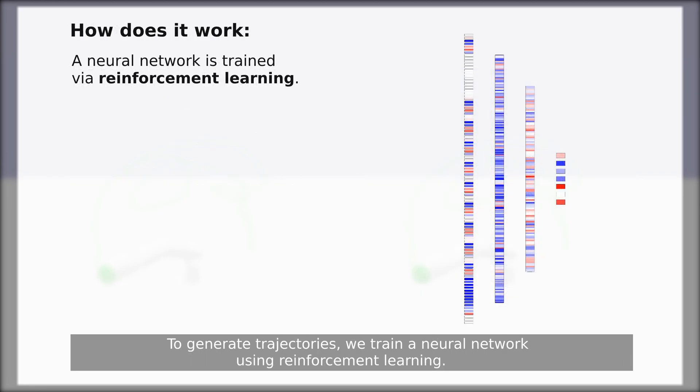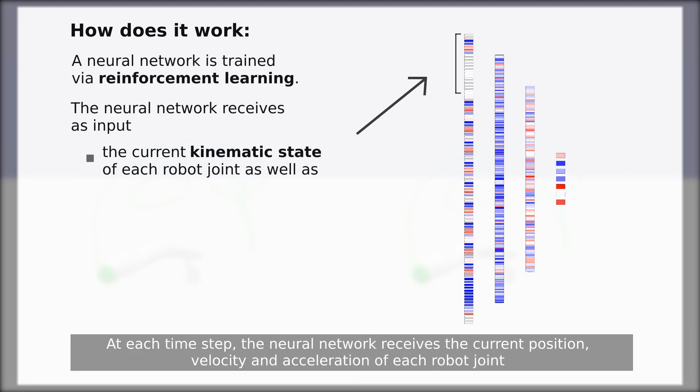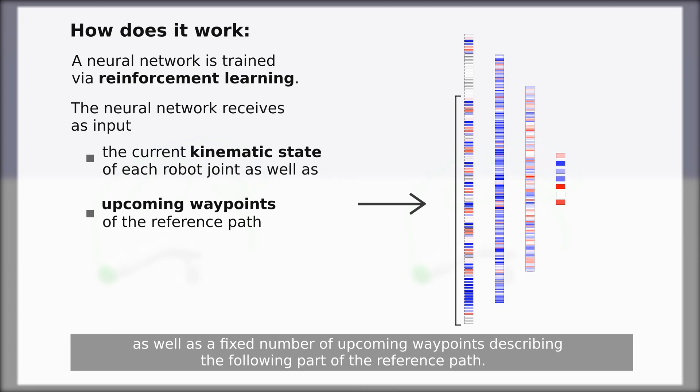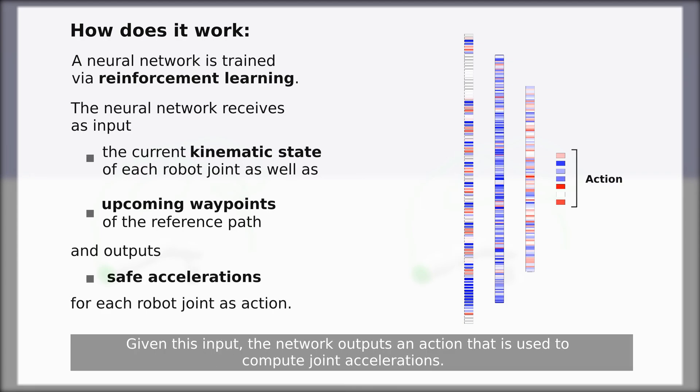To generate trajectories, we train a neural network using reinforcement learning. At each time step, the neural network receives the current position, velocity and acceleration of each robot joint as well as a fixed number of upcoming waypoints describing the following part of the reference path. Given this input, the network outputs an action that is used to compute joint accelerations. These joint accelerations are safe in the sense that the specified kinematic limits are never violated.